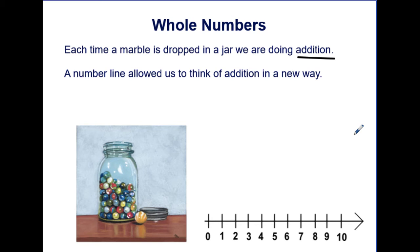You are finding a total or the amount of marbles in that jar by counting each one that goes in. A number line allowed us to think of addition in a new way, in addition to adding the marbles in a jar.